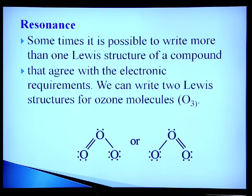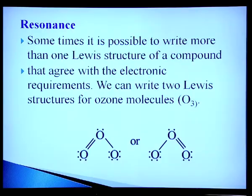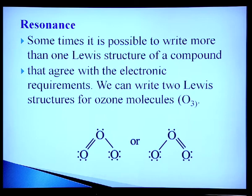Resonance: sometimes it is possible to write more than one Lewis structure for a compound. For example, ozone has one double bond and one single bond in each Lewis structure, so the two bond lengths should be different — but experimentally both bond lengths are found to be the same. This means ozone has two resonating structures, so no bond is purely double or single; the bond order is 1.5 and all bond lengths are the same. Similarly, one can explain the resonating structures of carbon dioxide and sulfate. Carbonate has three resonating structures.